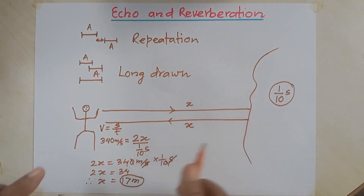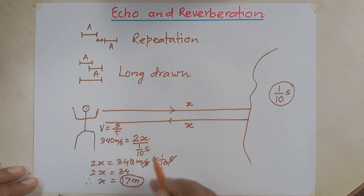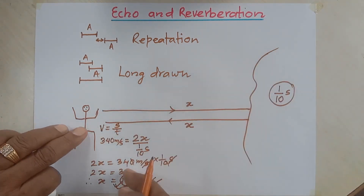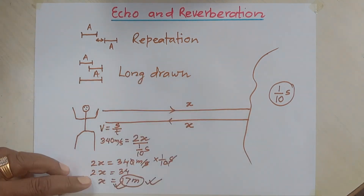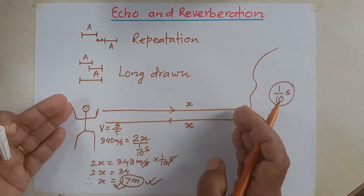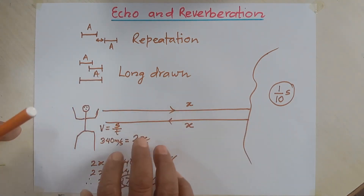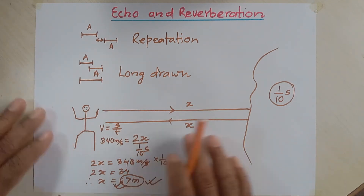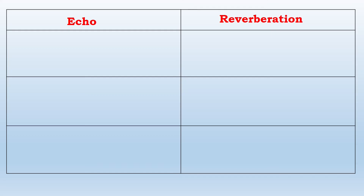If the distance between the person and the sound reflecting surface is 17 meters, then the reflected sound comes to his ear exactly at 1/10 of a second — this is the demarcation distance. If the distance is more than 17 meters, the reflected sound reaches the ear after 1/10 second — that is the condition of echo. If the distance is less than 17 meters, the reflected sound enters the ear within 1/10 second — that is the condition of reverberation.